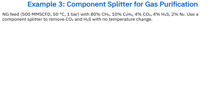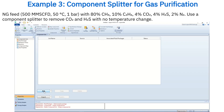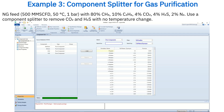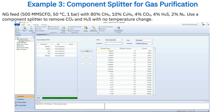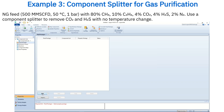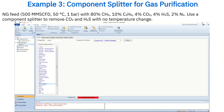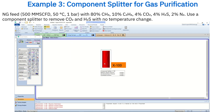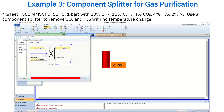Let's walk through the solution step by step. First, add the components: methane, ethane, carbon dioxide, hydrogen sulfide, and nitrogen. Now select the property package — for this system we'll use the Peng-Robinson model. Next, enter the simulation environment. From the model palette, insert a component splitter, double-click on it, and name it Splitter.